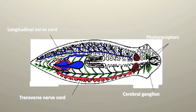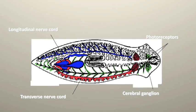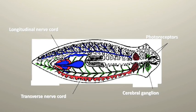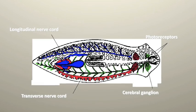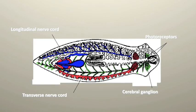Planaria demonstrate negative phototaxis, meaning the creature moves away from light. Light in the planarian environment means heat and dried out bodies, which relates back to death.